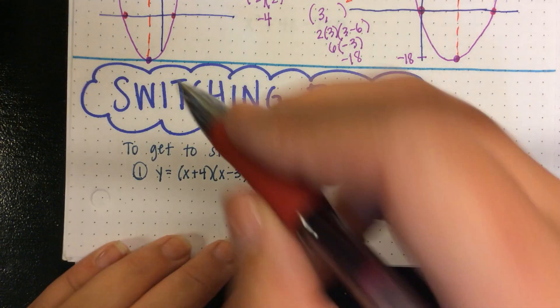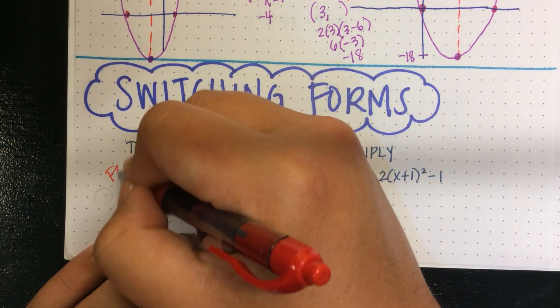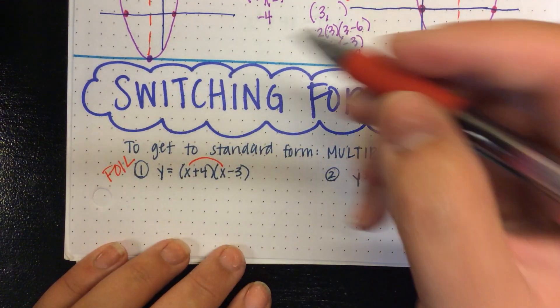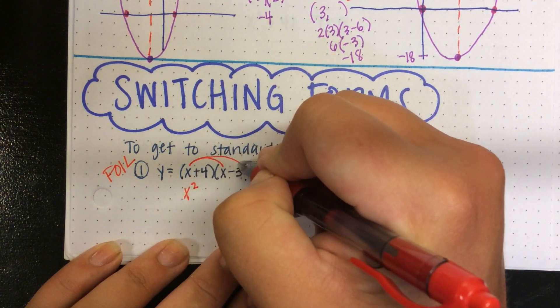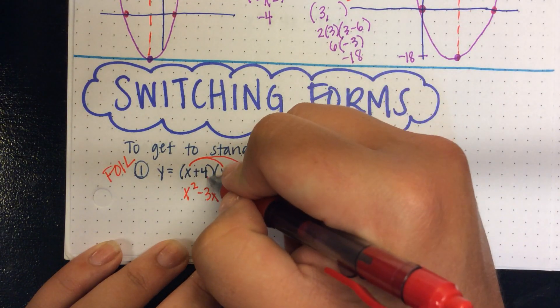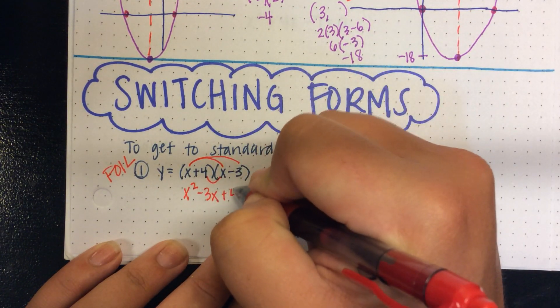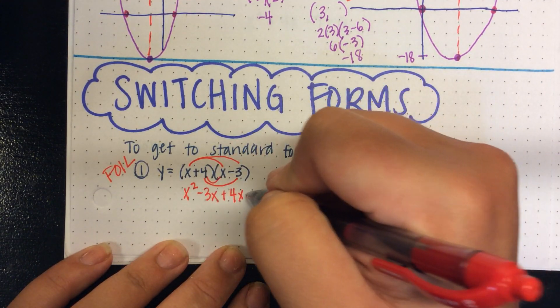So for the first one, we're going to distribute, right? FOIL, remember FOIL, first, outer, inner, last. So my first terms, x times x is x squared. My outer terms, x times negative 3 is negative 3x. My inner terms, 4 times x. And the last terms in each parentheses, 4 times negative 3.